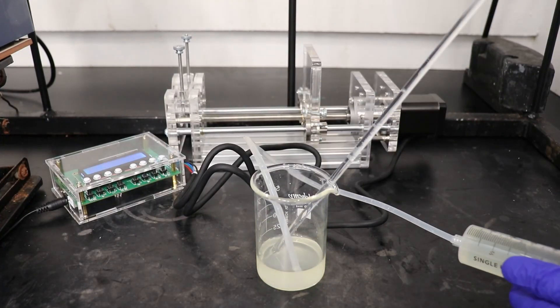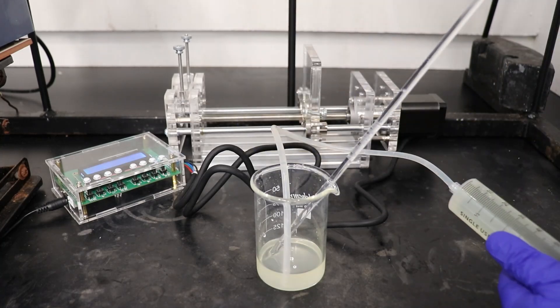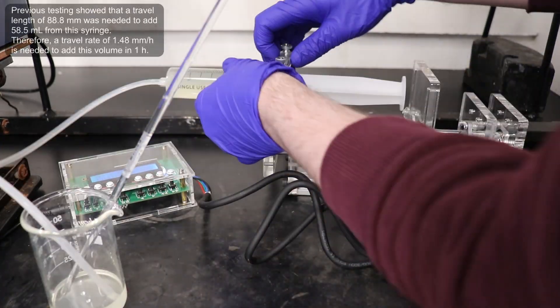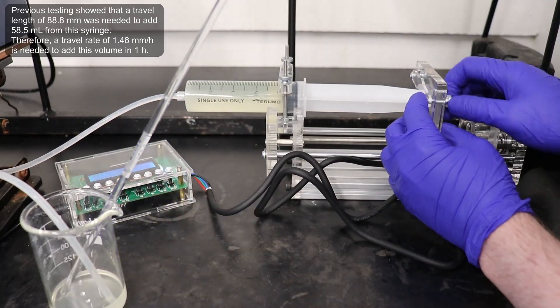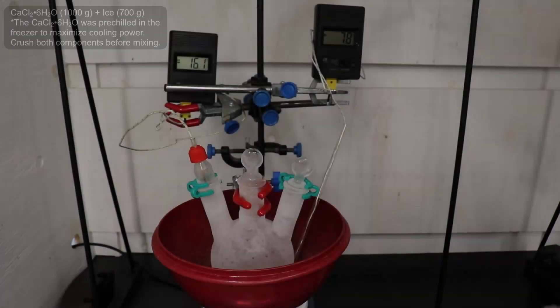Next, I loaded the syringe with the previously prepared, room temperature sodium nitrite solution. I then placed the syringe into the syringe pump, and programmed it to inject 58.5 mL over a 1 hour period. Once everything was set up,